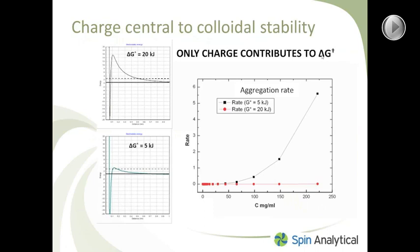Charge is important because it is what keeps your protein in solution. If you look at these two graphs, the upper graph shows the activation energy profile for a protein that has a charge of about ten, and the one below shows the activation profile for something with a charge of about three or four. The aggregation rate for the low-charge molecule is at least a thousand-fold higher than for the one with a charge of about twenty. Only charge contributes to a positive value of the activation energy; all other proximity energies and weak interactions between molecules are attractive and therefore cause the protein to come out of solution.